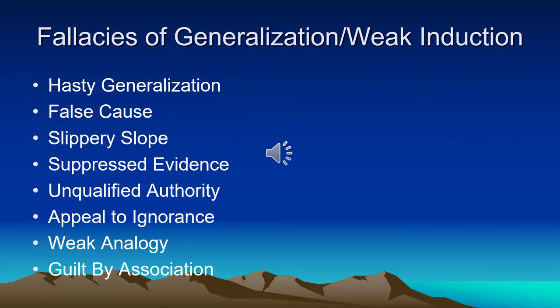In this category, we have fallacies such as hasty generalization, false cause, slippery slope, suppressed evidence, unqualified authority, appeal to ignorance, weak analogy, and guilt by association. Some of these have subcategories. For example, the gambler's fallacy is a subcategory of false cause because it's a mistake to think that your past losing will in some ways cause your future winning. Most of these fallacies are pretty straightforward, although there are some sticking points — common errors that occur almost every semester. I'll address these as I go through the exercises, especially hasty generalization, which appears to cause some problems.